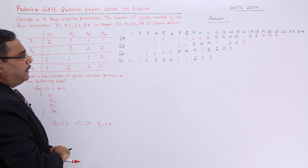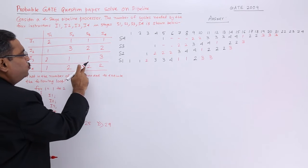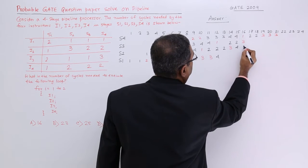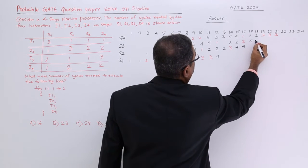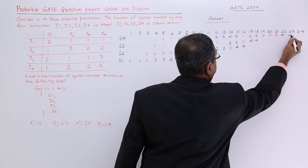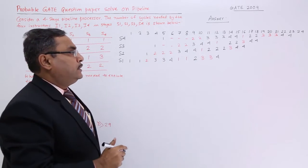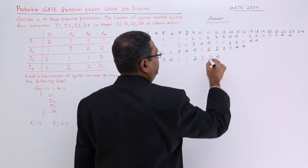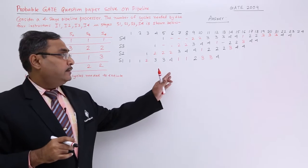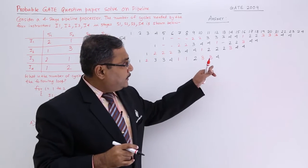The last one, the I4. I4 will be coming with 1, 2, 2, 2. So 1, 2, 2, 2. So many pipeline stalls have occurred in different phases and different cycles.